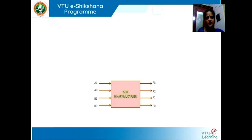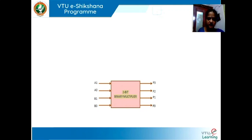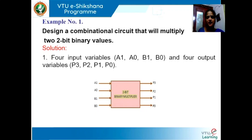Let us see how we can implement this by considering a simplified example — a 2-bit binary multiplier. When we say 2-bit multiplier, we know it will have two sets of inputs: A0, A1 and B0, B1. And we have product outputs P0, P1, P2, P3. The function of this output is to find the product of the two input bits and give the results. Our requirement is to design a combinational logic circuit that will give the output by doing multiplication of the inputs.